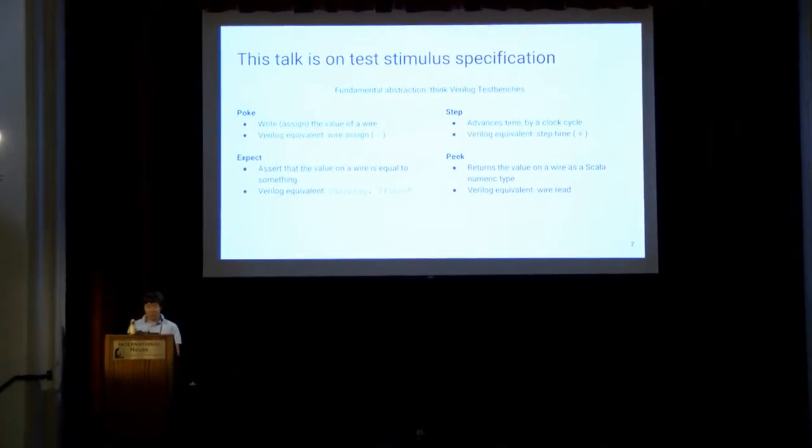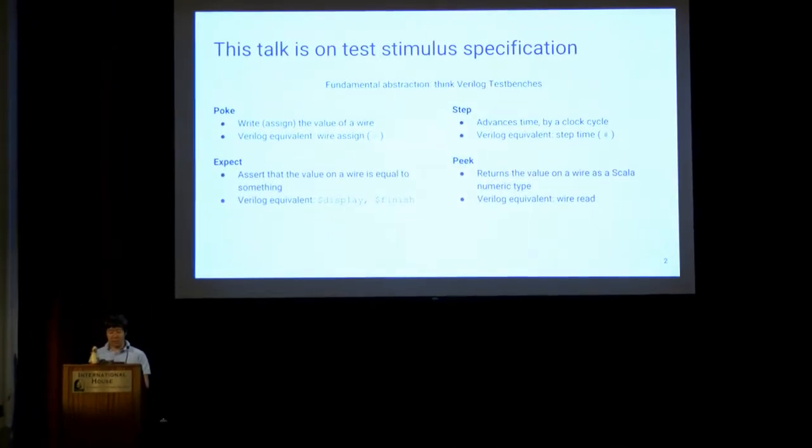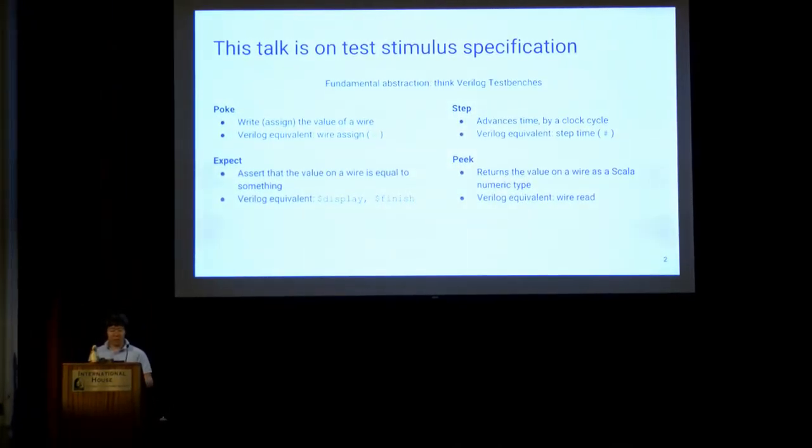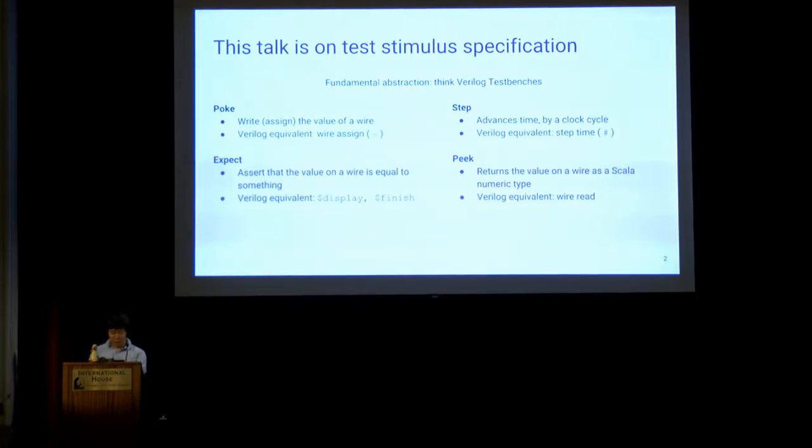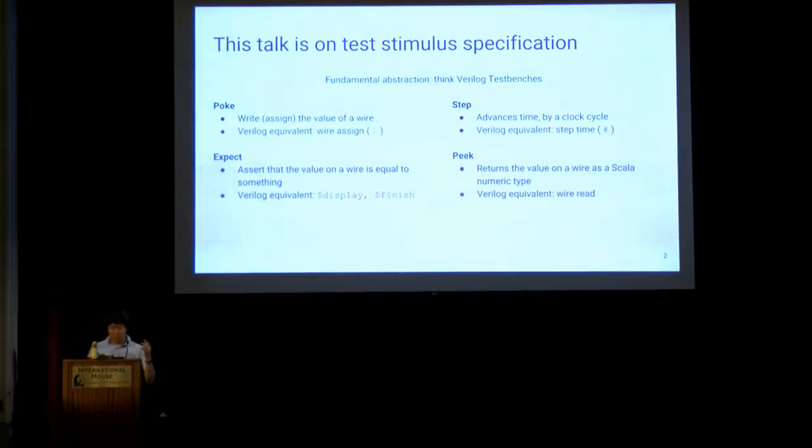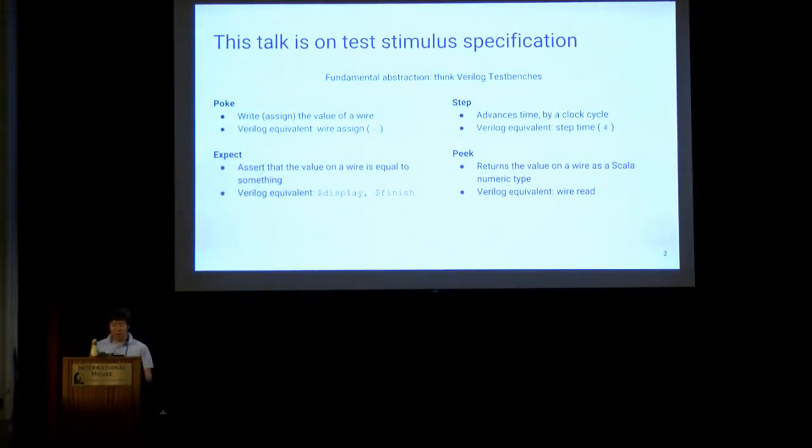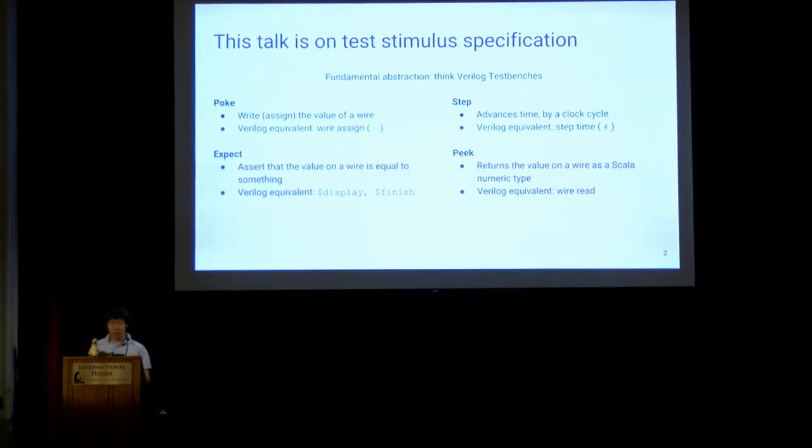I'm mostly looking at improvements over the current peak poke tester, which has a few fundamental abstractions for interfacing with the simulator. These are poke, which assigns a value to a wire; expect, asserting that the wire value equals something; step for advancing time by a clock cycle; and peak for returning the wire value as a scala-land numeric type. For those more familiar with Verilog, this is basically Chisel's version of the non-synthesizable test bench.